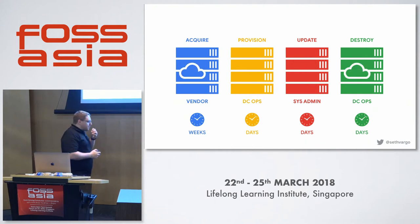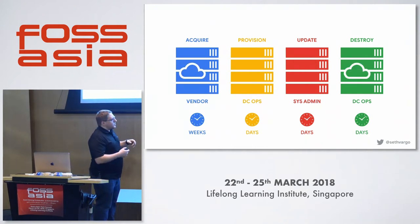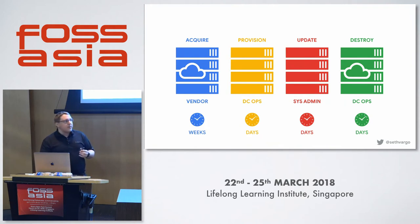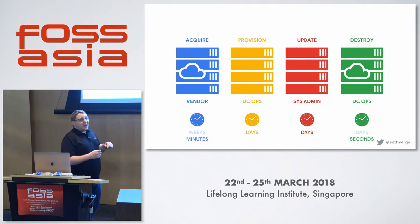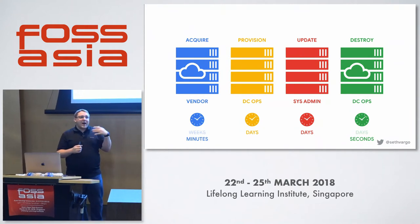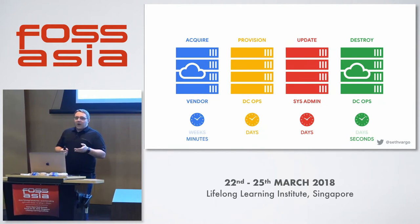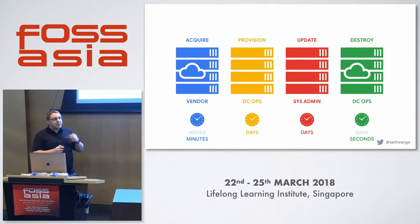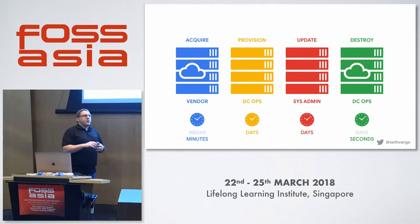The cloud changed all of that. The cloud took the acquisition phase — the A in the APID cycle — from weeks to minutes, if not seconds. From my phone right now on the Google Cloud app, I can provision more compute than existed in 1990 with one API call. It'll take maybe five minutes to get a server that large. For a smaller instance, you can get it in two to three seconds — that's how fast compute is at our fingertips now.